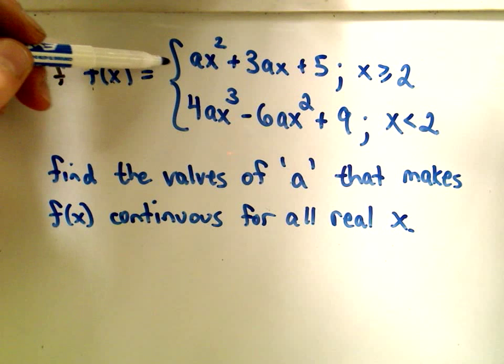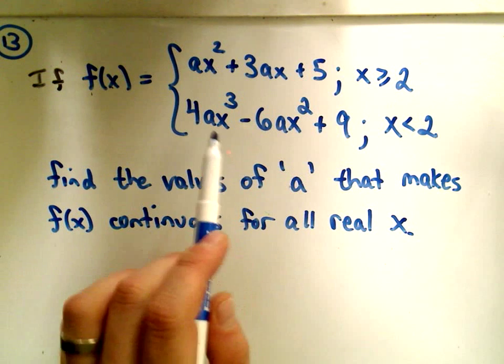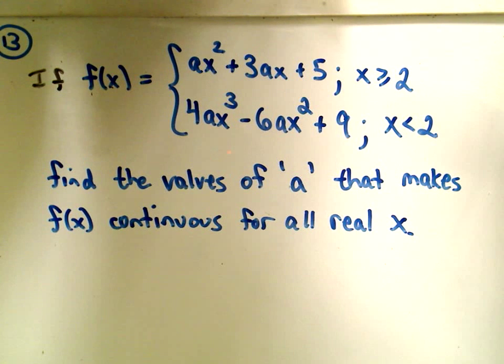It's a piecewise defined function ax squared plus 3ax plus 5 for x greater than or equal to 2, and then it's 4ax cubed minus 6ax squared plus 9 for x less than 2. They say find the values of a that makes f of x continuous for all real x.